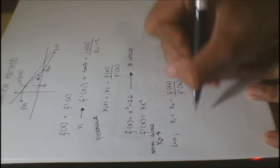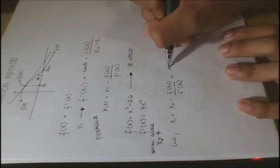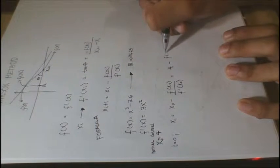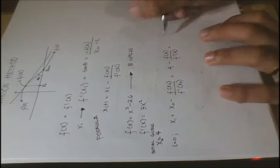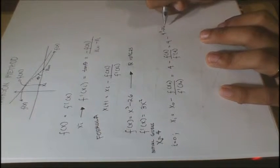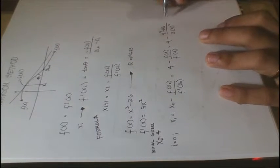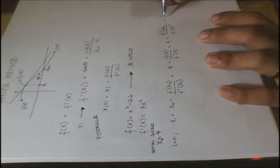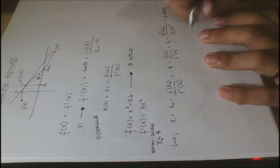So, our x1 for now is 4 minus f of 4 all over f prime of 4, which is then equal to 4 minus 4 cubed minus 26 all over 3 times 4 squared. This is equal to 3.2083.